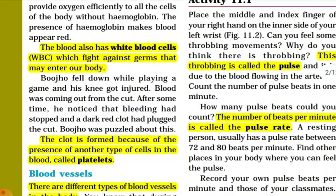Now let us move to white blood cells. White blood cells fight infection and protect us from diseases. They help to fight against germs which may enter our bodies and cause diseases. Some white blood cells can eat up germs like bacteria which cause diseases, while other white blood cells make chemicals known as antibodies to fight against infection. White blood cells are much smaller in number than red blood cells.